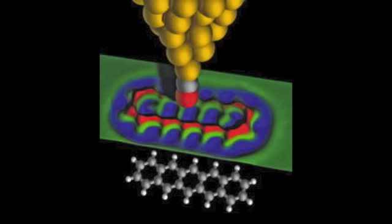These scientists use an atomically sharp metal tip terminated with a carbon monoxide molecule. This enabled them to measure the short range of forces and image the inner structure of the molecule.